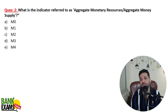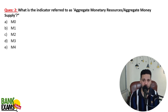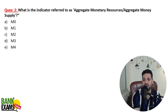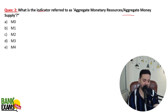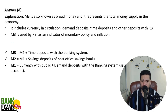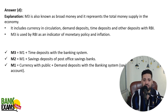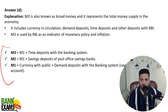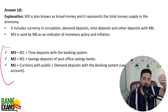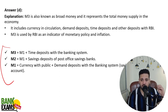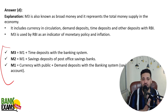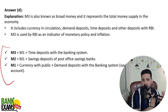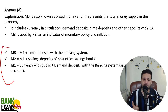Next question: What do you mean by aggregate monetary resources? What is the indicator referred to as aggregate money supply? Let me explain M1, M2, and M3. M1 means the currency with the public — the notes you have in your pocket — plus the demand deposits of the bank, meaning the money deposited in your savings or current account. That is M1.